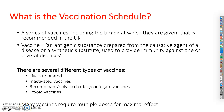Vaccines may be live attenuated, in which an infectious agent is taken and its virulence reduced so that it cannot cause infection. However, it is still sufficient to provide an immune response. Inactivated vaccines consist of pathogens that have been grown in culture and then killed using methods such as heat or formaldehyde.